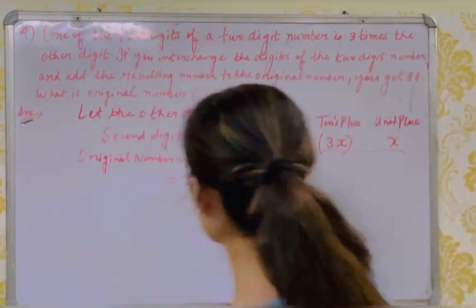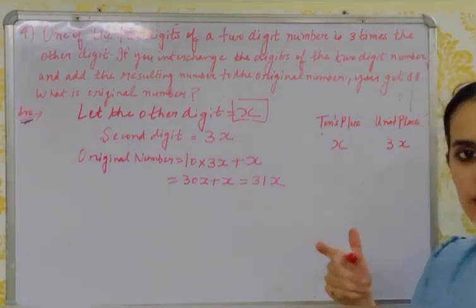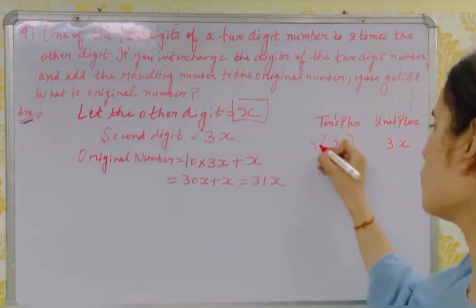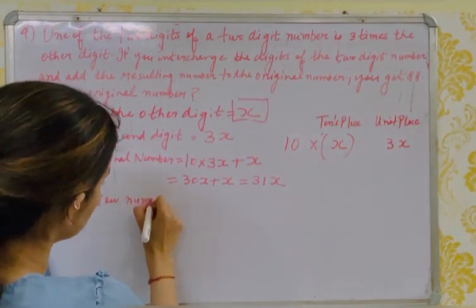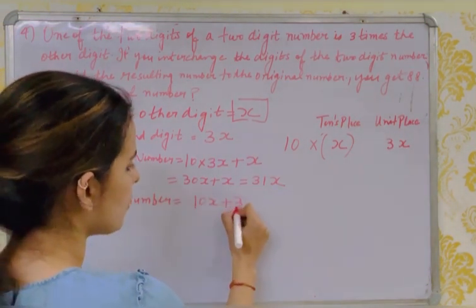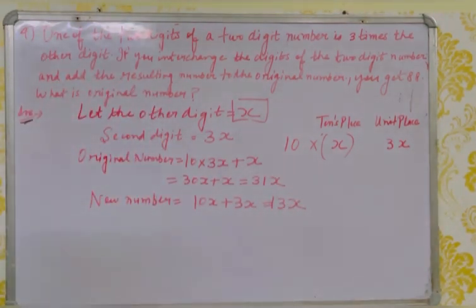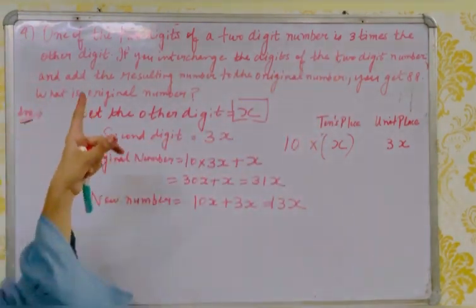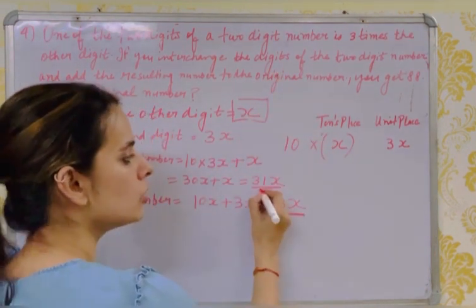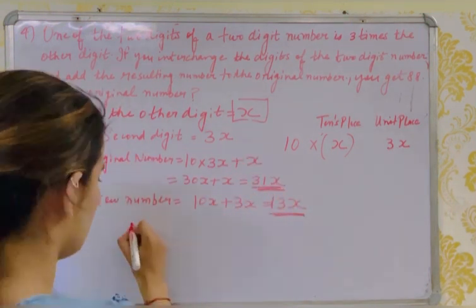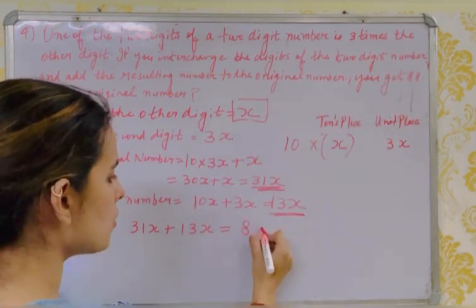Now interchange: shift 3x to the units place and x to the tens place. Multiply x by 10. The new number = 10x + 3x = 13x. According to the problem, add the resulting number to the original number to get 88: 31x + 13x = 88.